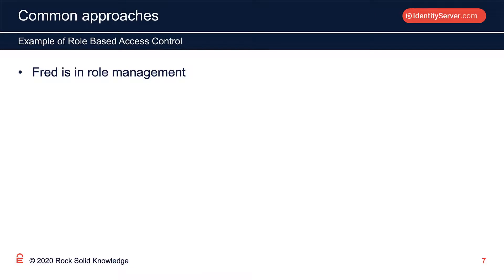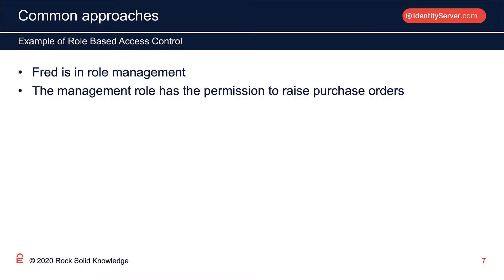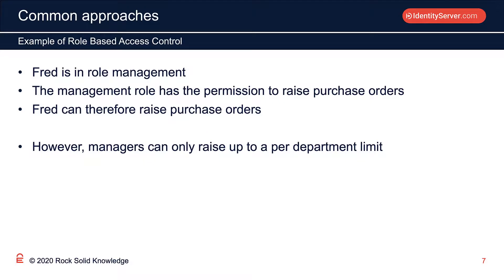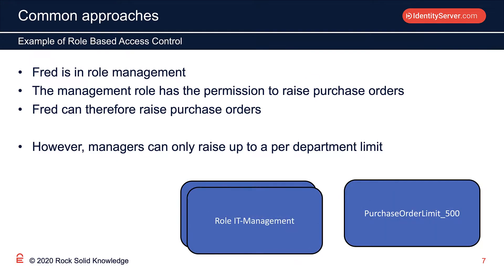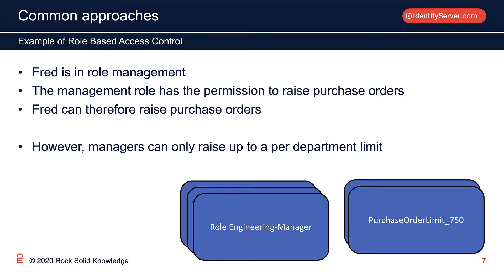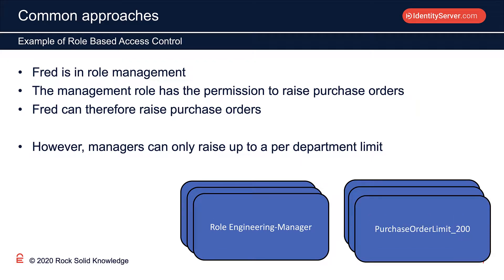Let's consider the following role-based access control example. Fred is in the management role. The management role has the permission to raise purchase orders. Therefore, Fred can raise purchase orders. But what if the organization decides that managers can raise purchase orders, but only up to a per-department limit? Can we still solve this with RBAC? Well, we can, but it's not going to be pretty. We don't just have a simple permission called 'raise purchase orders' — we actually need a permission that specifies a limit. That means we need to assign the right permission to the right manager depending on what department they're in, requiring us to create a management role per department. This leads to role explosion and is without doubt the common downside of RBAC.